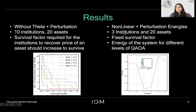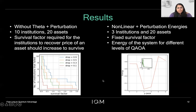Here, we have considered three institutions and 20 assets. The total number of qubits required to represent the three institutions is 3 times the number of qubits used to represent each institution. Therefore, I have used here 12 qubits. This number does not depend upon the number of assets because it is independent of the number of assets — we are representing the market values of the institutions as the qubits. Therefore, for realistic calculations, we can introduce as many assets as are realistically feasible. Here, I'm plotting the energy for different levels of QAOA for a fixed survival factor, and I show in the inset how the energy has been optimized using the classical optimizer. What we find is that the parameter range, in the presence of the nonlinear term, has to be large — beyond 3 — for the institutions to survive. This is as expected.